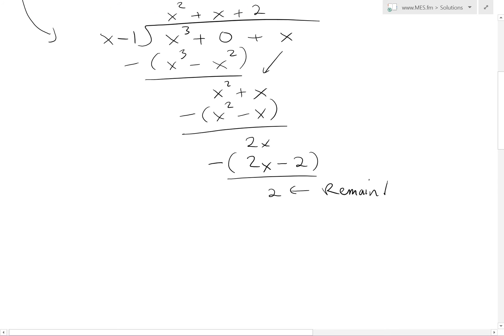Now we have our fraction broken down. The result is x² + x + 2 with remainder 2. So x³ + x divided by x - 1 equals x² + x + 2 plus 2/(x - 1).